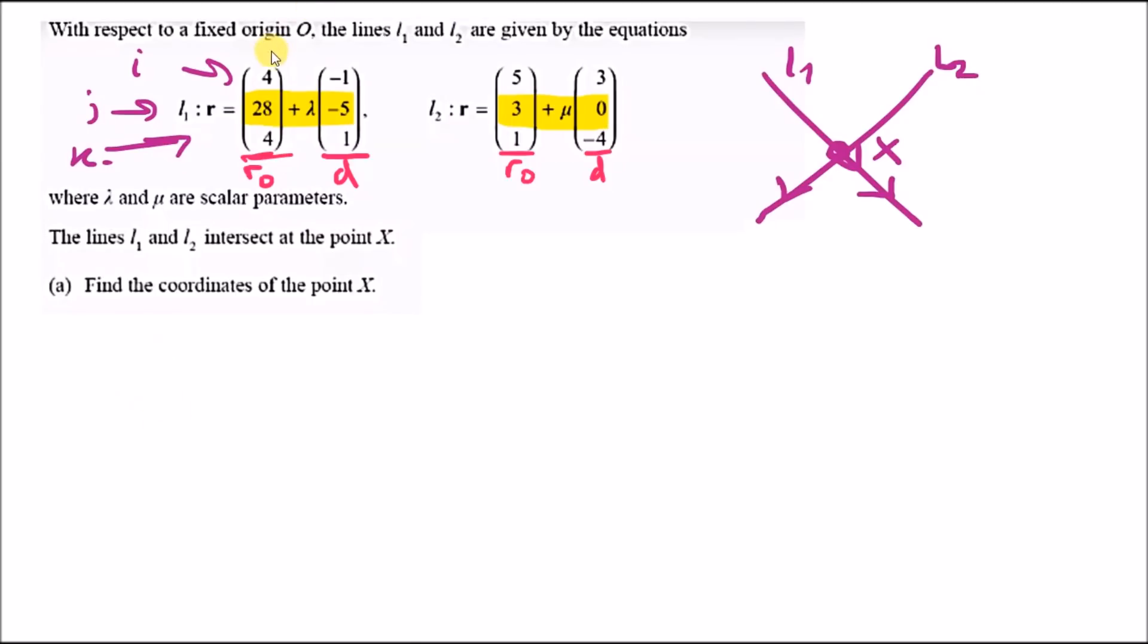For example, 4 plus lambda times minus 1, which is 4 minus lambda, must equal the second line, which is 5 plus 3 mu. Notice we've got two variables, so we just need a second pair of equations. Next, 28 minus 5 lambda equals 3 plus 0 mu, or just 3.